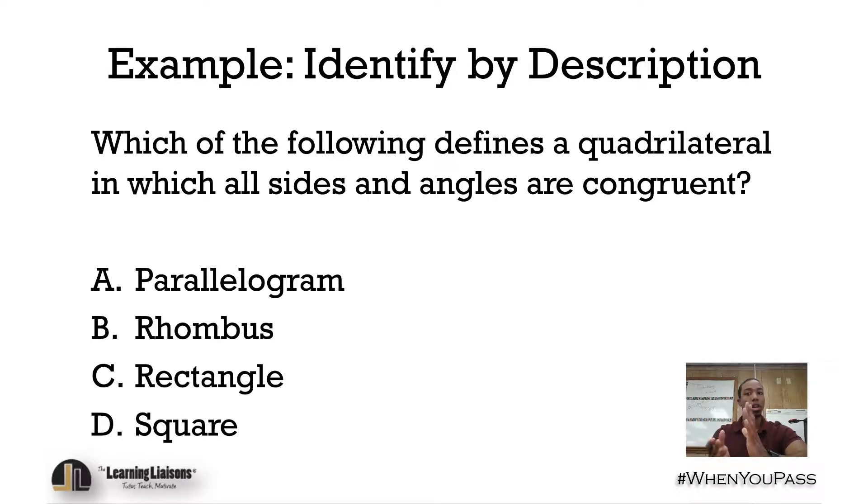Go ahead and pause the video, see if you can figure it out, but I'm going to go ahead and go over it right now. Let's think about it—remember to always read the question first. Which of the following defines a quadrilateral? Okay, quadrilateral—how many sides are we dealing with? Four sides, in which all sides and angles are congruent. All right, equal sides and angles.